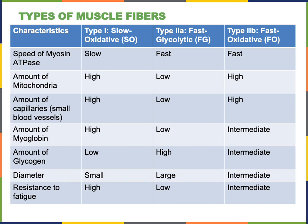Slow oxidative fibers have a high concentration of mitochondria, which are responsible for aerobic cellular respiration. They also have a high number of capillaries, a high concentration of myoglobin — the protein that stores oxygen inside muscle fibers — and a relatively low concentration of glycogen, the carbohydrate that serves as a storage form for glucose. Slow oxidative fibers are also relatively smaller in diameter, and together these features lead to a relatively high resistance to fatigue.